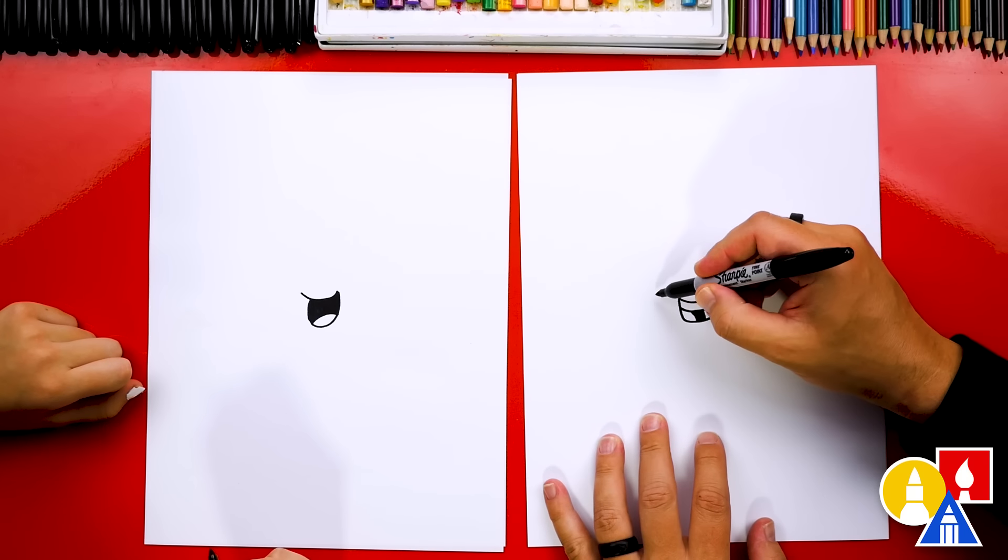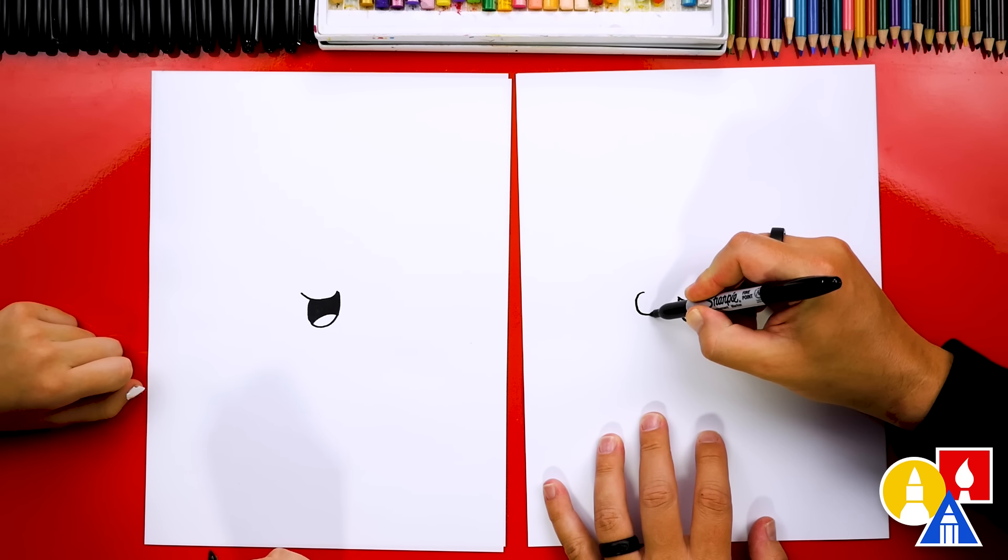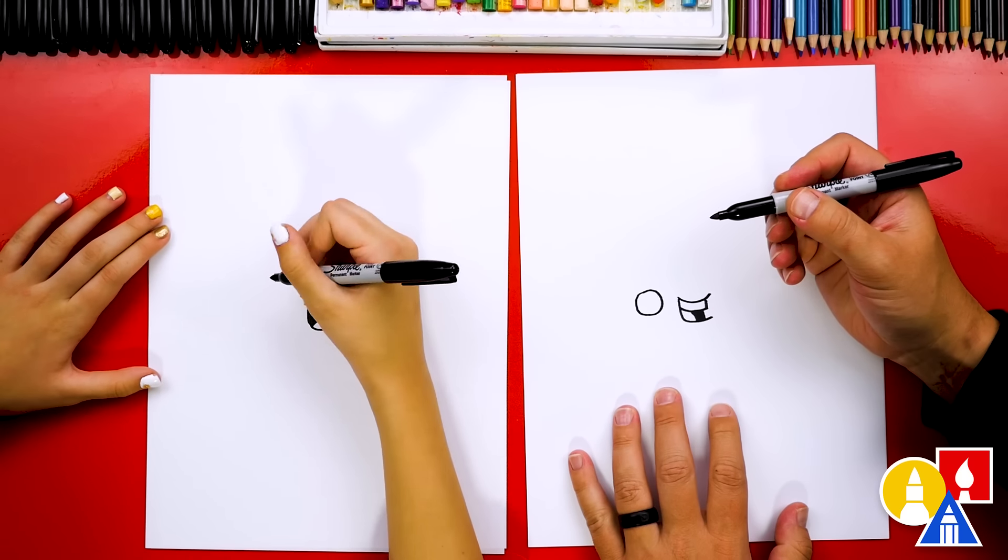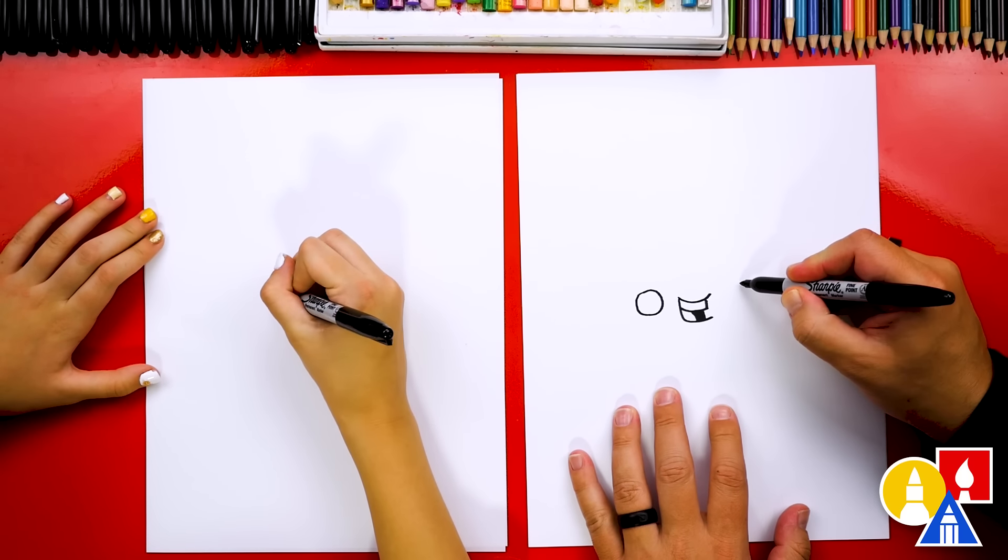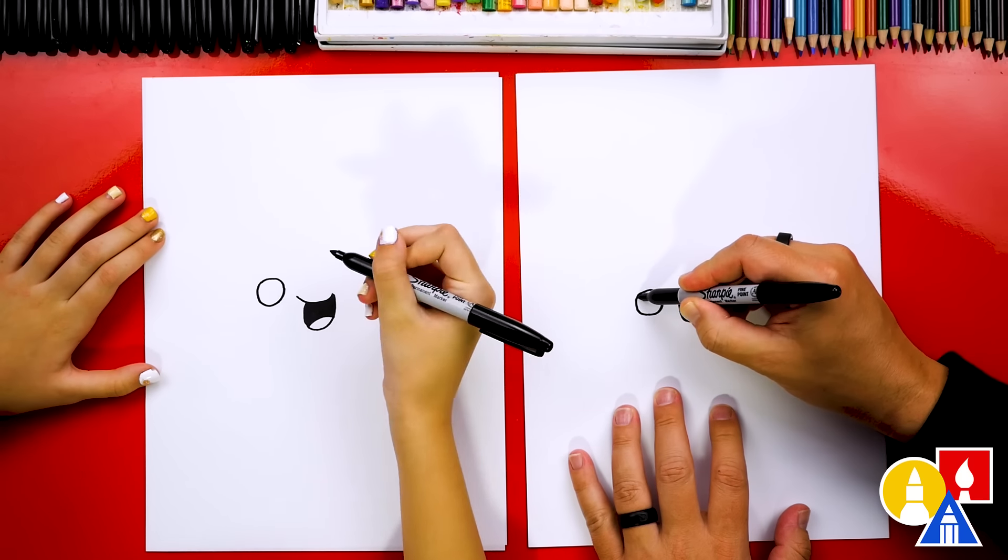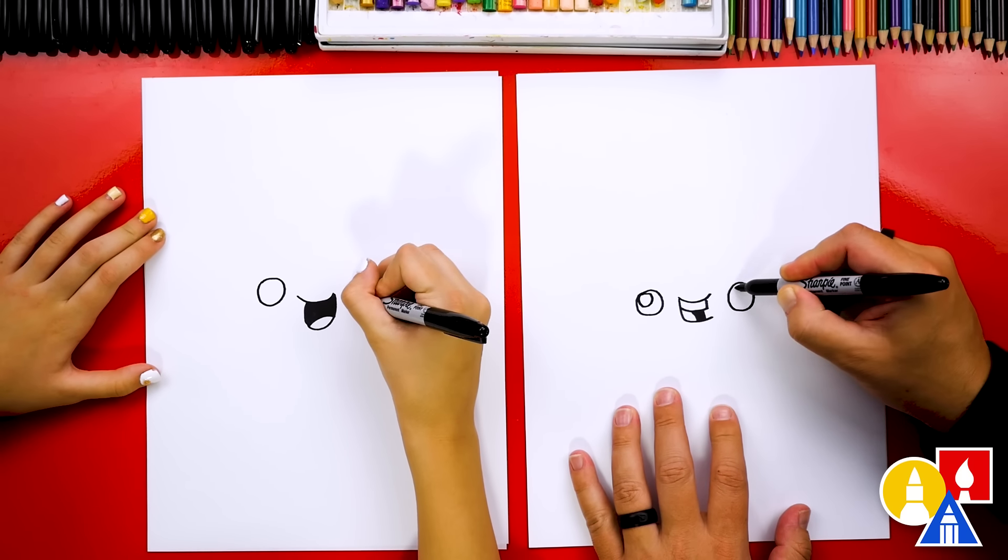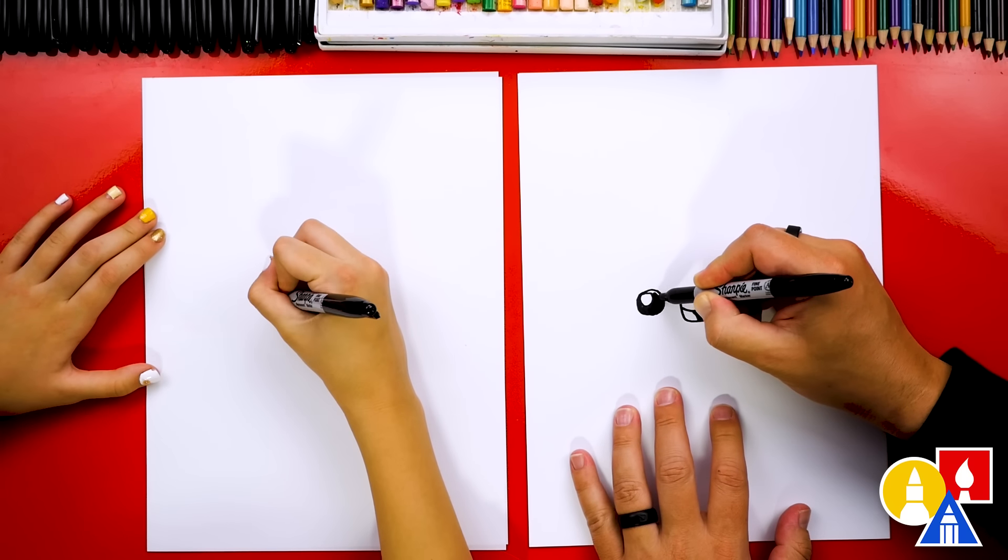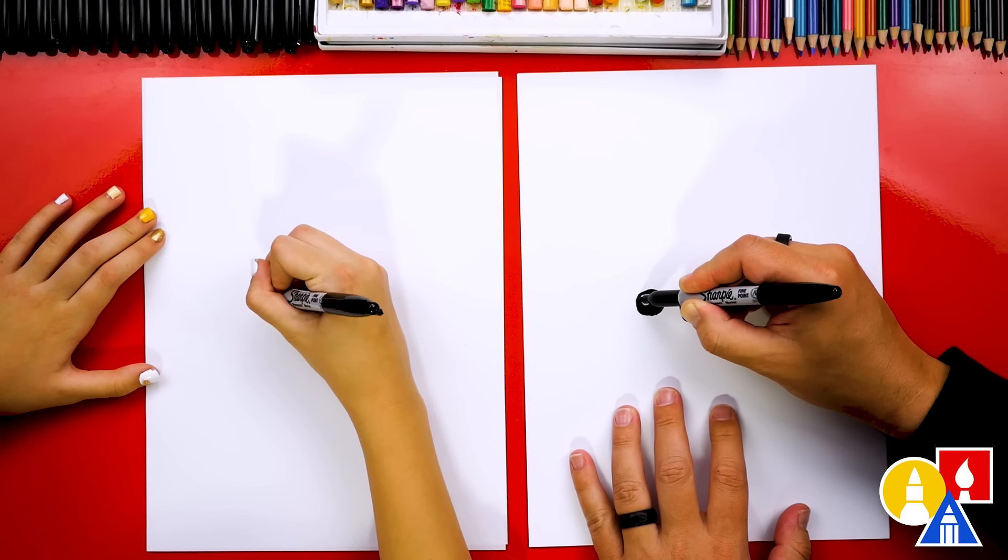Now let's draw the eyes. And if we ever go too fast or if we fast forward the video, what can our friends do? Pause the video. If you need extra time. I'm going to draw a circle over here and a circle over here that matches. I'm going to draw a smaller circle inside for the highlight to make the eyes look shiny. And then I'm going to color in the big circle but leave the little circle white.